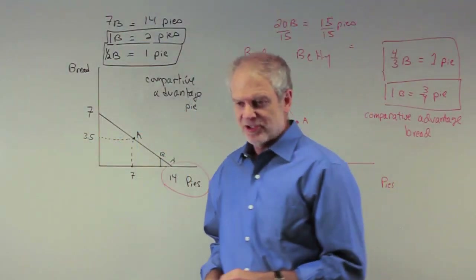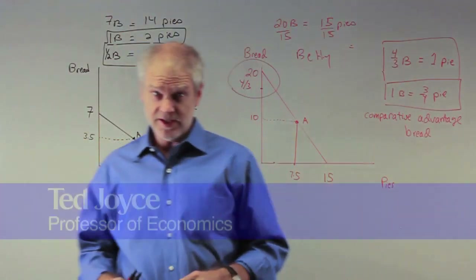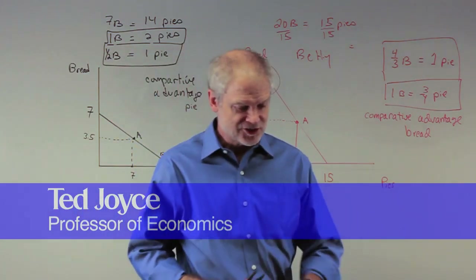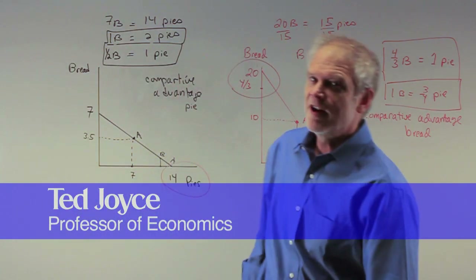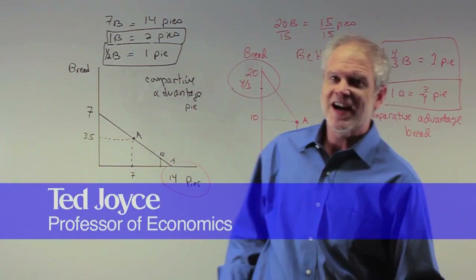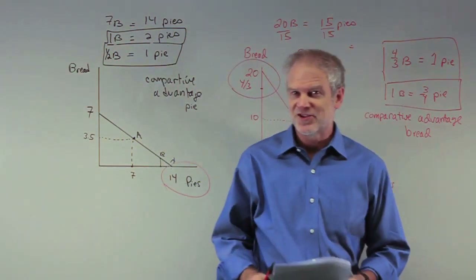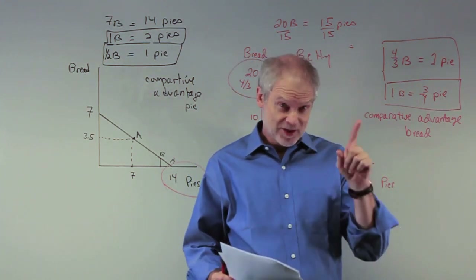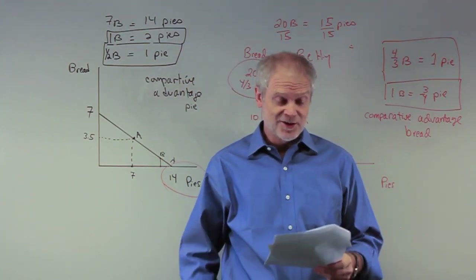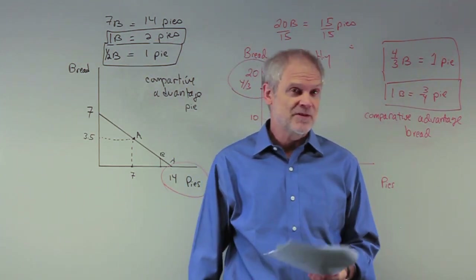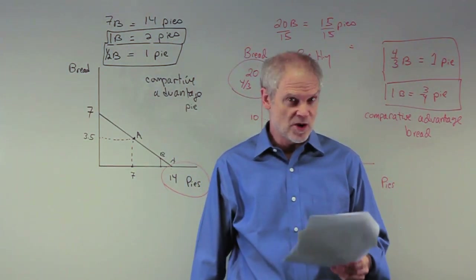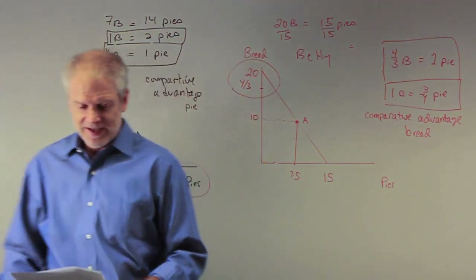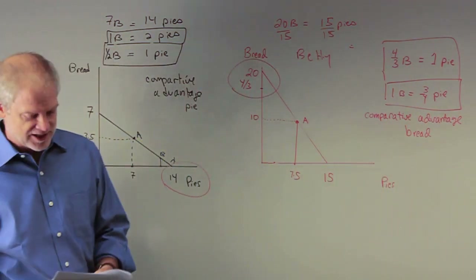Hopefully you had a chance to look at number seven, because numbers six and seven really tie together the whole notion of comparative advantage. If you can get these two, you'll really understand the principle of comparative advantage and why it's so, in essence, magnificent. Let's go to number six.